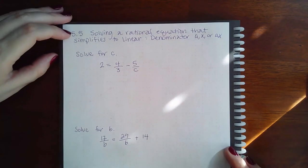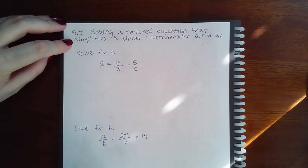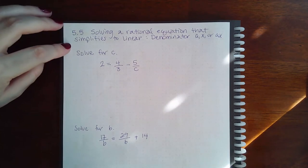Here we have 5.5 solving a rational equation that simplifies to linear denominator A, X, or AX.